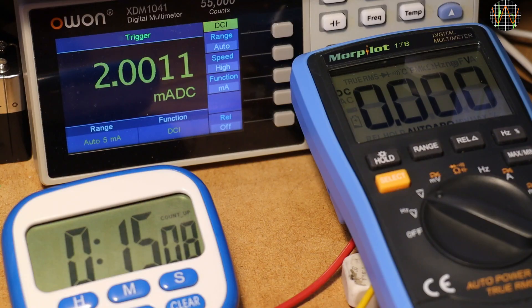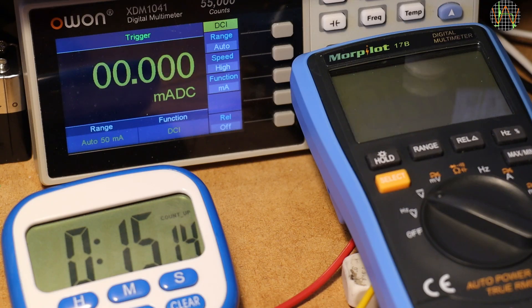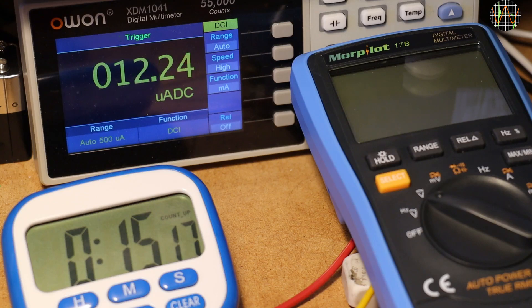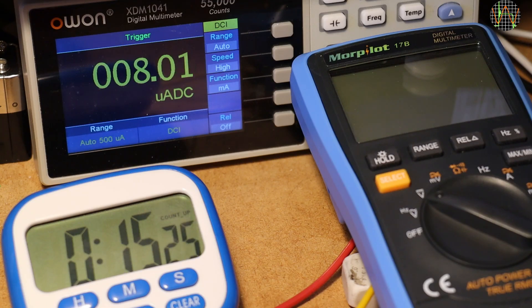The meter has an automatic power-off function which is on by default. You get a warning at 14 minutes and at 15 minutes the meter shuts down into a sleep mode using about 8µA of current from the battery. You can disable APO by holding select when turning the meter on. It will still beep annoyingly every 15 minutes.